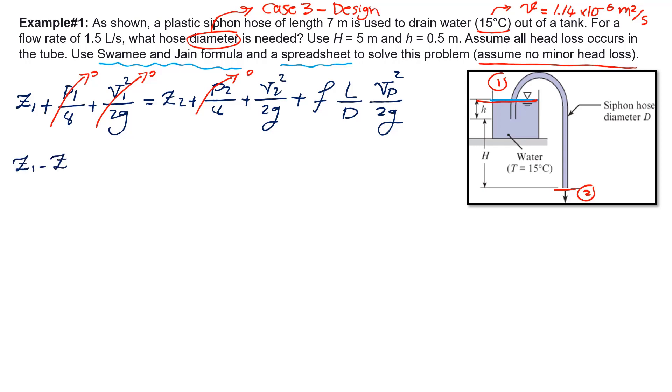I'm going to simplify this equation and write it as Z1 minus Z2 equals velocity squared over 2g. Notice that the diameter does not change in this pipe, so velocity in the pipe is equal to velocity 2. I can take the velocity out of the bracket, and it would be velocity squared over 2g times 1 plus FL over D.